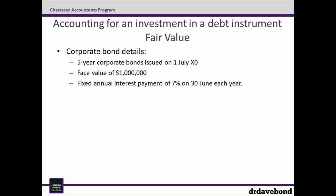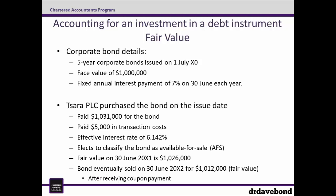The debt instrument in question is a 5-year corporate bond issued on the 1st of July X0. It has a face value of $1 million and pays a fixed annual interest payment of 7% on the 30th of June each year. SARA PLC purchased the bond on the issue date and paid $1,031,000 for it as well as $5,000 in transaction costs. We're told the effective rate is 6.142% and that SARA has classified the bond as available for sale.